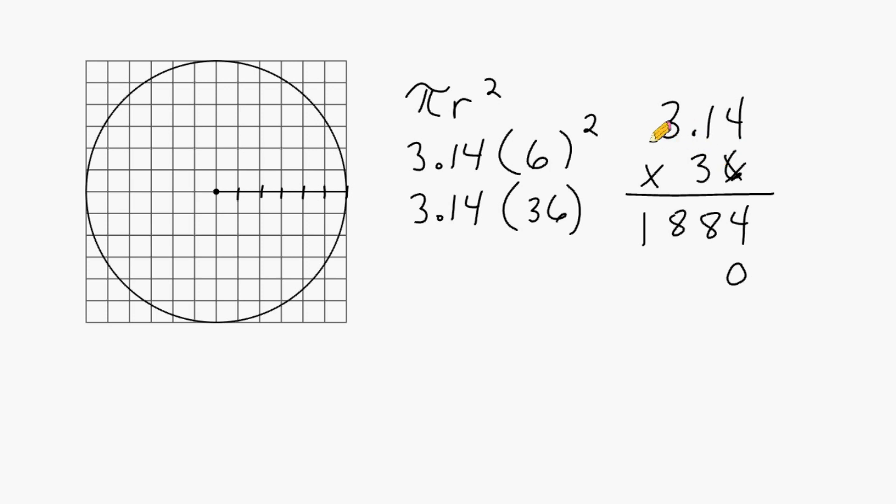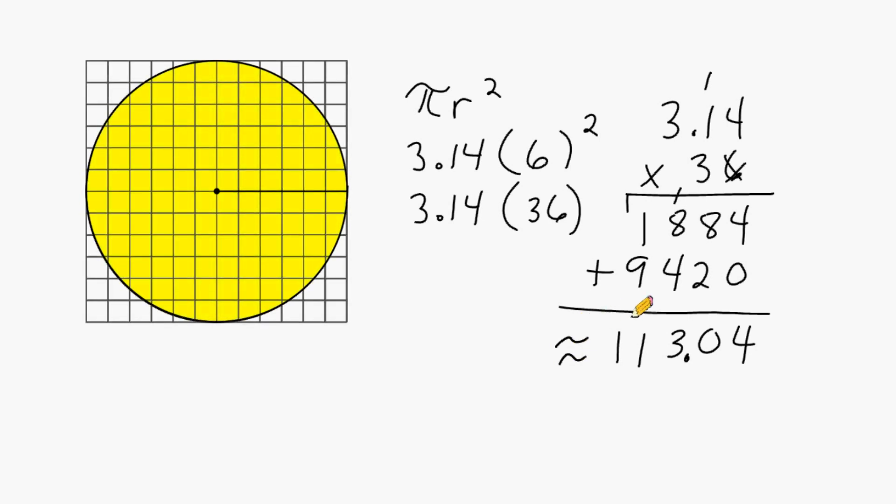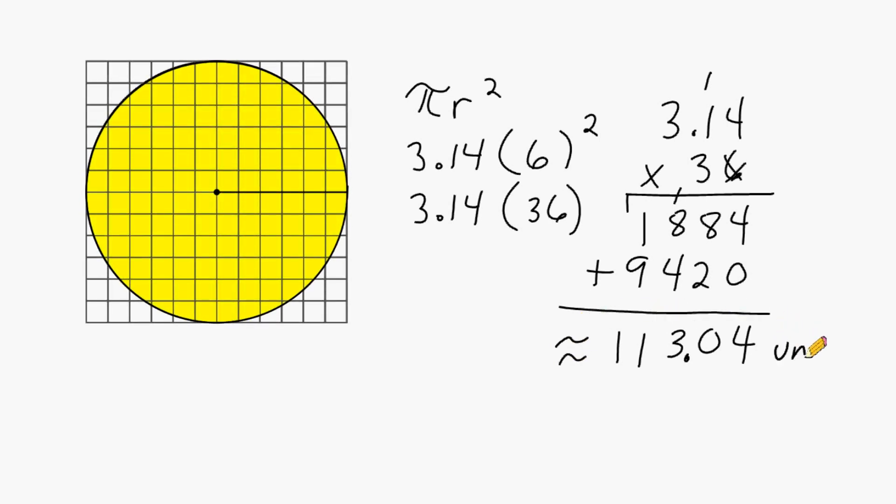And then we have to do 3 times 3.14. So that's going to be a 12 carrying 1, it's going to be 3 plus 1 more is 4, and 3 times 3 is 9. Now we add these digits together. And this is a 4, and this is a 4, this is a 10, this is going to be 13, and this is going to be 11. And our decimal goes right here in the answer. So the area of this circle is approximately equal to 113.04 square units.